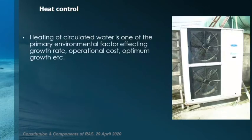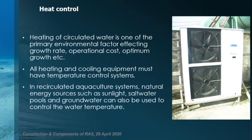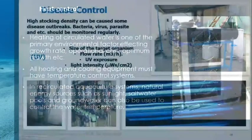Heat control: heating of circulated water is one of the primary environmental factors affecting growth rate, operational cost, and optimum growth. Sometimes you want to cool the water instead of heating, especially in salmonid productions. All heating and cooling equipment must have temperature control systems. In recirculating aquaculture systems, natural energy sources such as sunlight, saltwater pools, and groundwater can also be used to control water temperature.